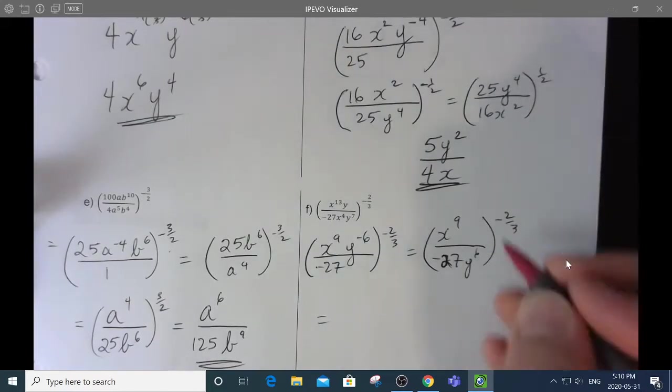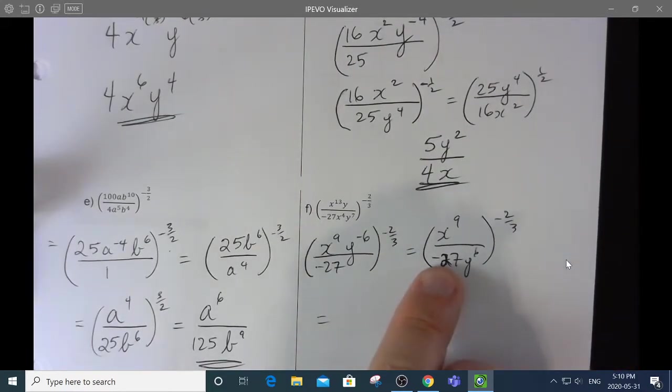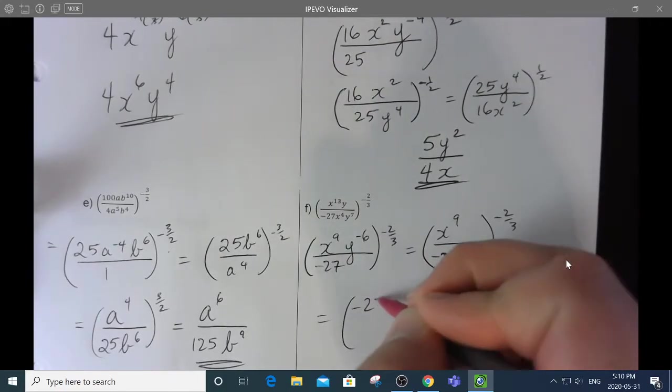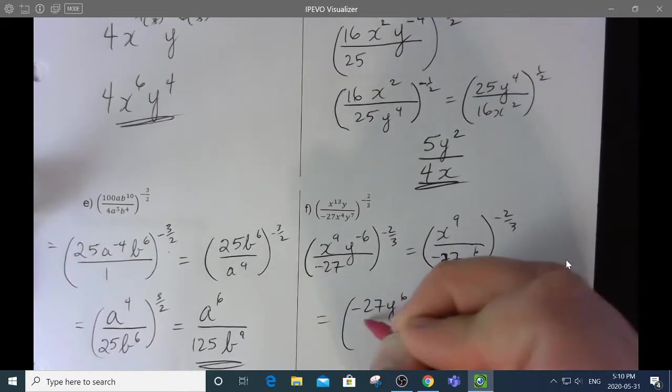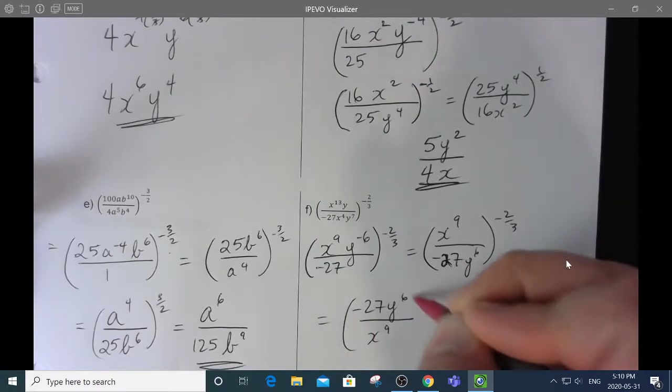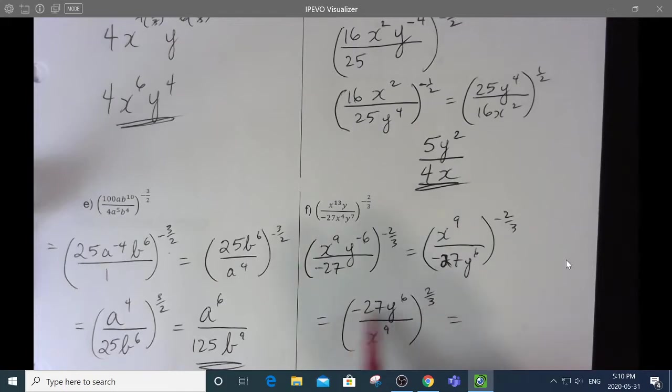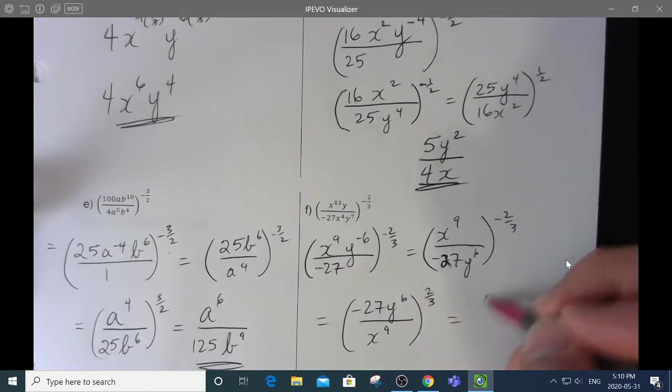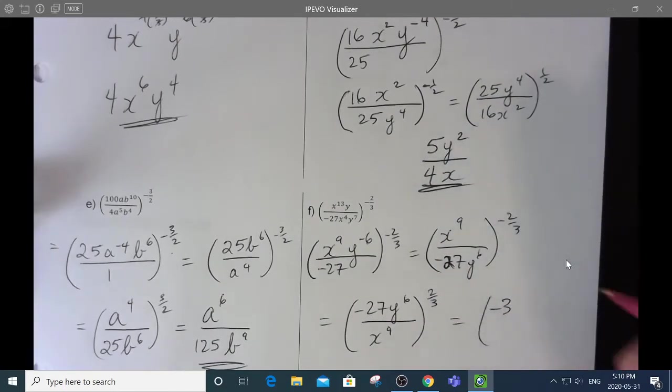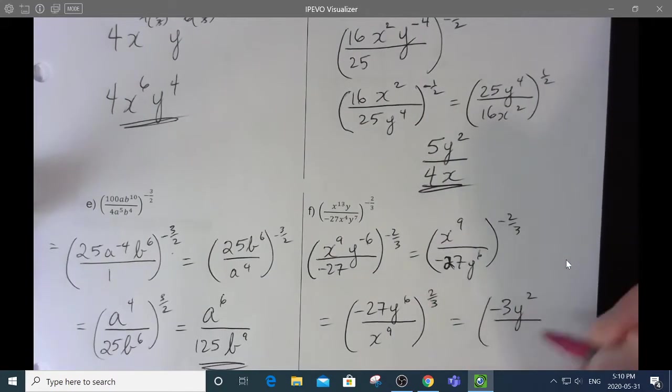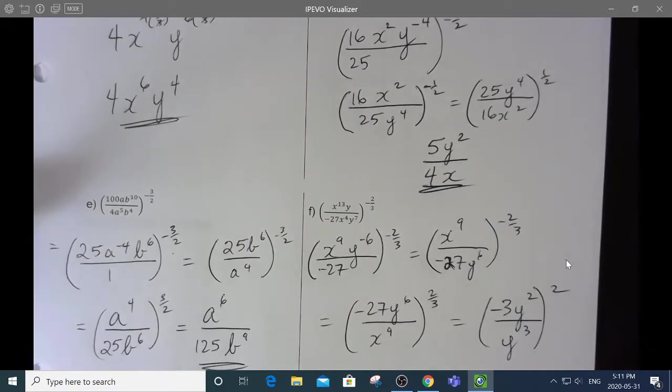Now, I'll deal with this negative, which reciprocals everything. It doesn't change this negative. Not yet, anyway. So, that's going to make that negative 27y to the 6 over x to the 9 to the 2 thirds. Now, I'm going to cube root everything that's in here, which would be negative 3. And then 6 divided by 3 is 2, and 9 divided by 3 is 3. And then I'm going to square everything.